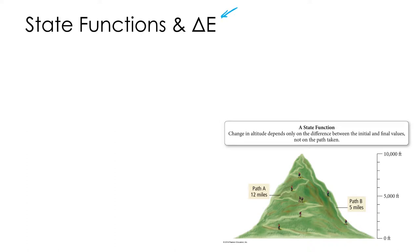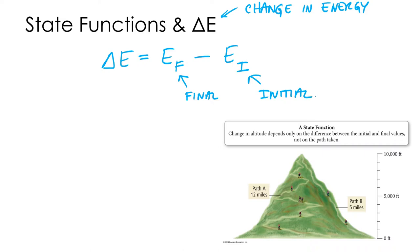Or delta E. And again, we use the Greek letter delta for change. And the change in energy and the change in anything we talk about this semester is always going to be the final minus initial. So the energy of the final state minus the energy of the initial state. So delta E equals E sub F minus E sub I. Final minus initial.